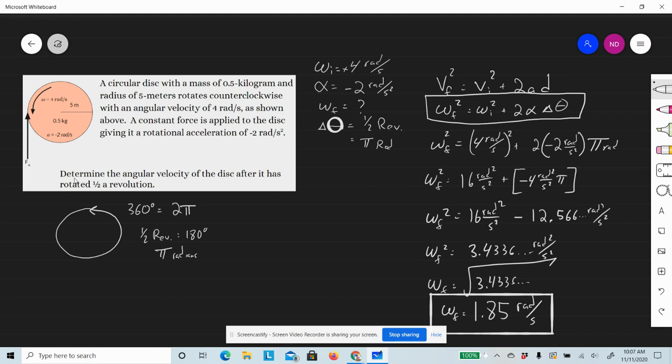And that's it. The velocity after half a revolution is 1.85 radians per second. It started at positive 4, accelerated negatively, and after half a revolution, it slowed down from 4 to 1.85.